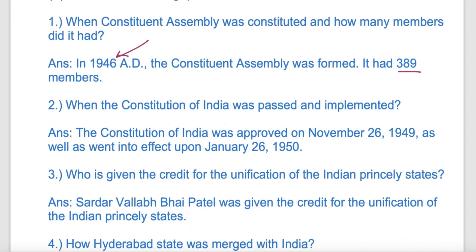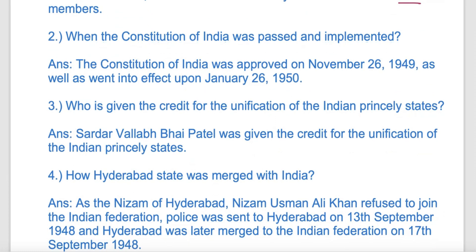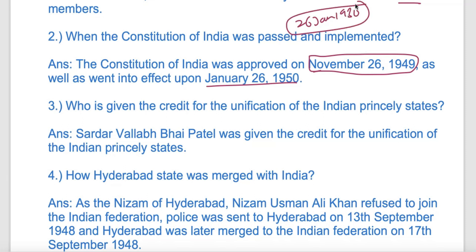Another important question: When was the Constitution of India passed and implemented? In the previous chapter, we read that freedom fighters had declared the 26th January as a significant date. Independence Day was 15th August, but the importance of 26th January was maintained, and on that day the Constitution was passed and implemented.